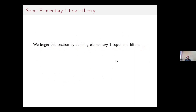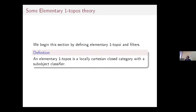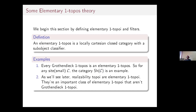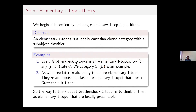We begin by defining elementary infinity-one toposes and then filters. An elementary infinity-one topos is a locally Cartesian closed category with a sub-object classifier. Examples include Grothendieck infinity-one toposes. For any small site C, the category of sheaves is an example of an elementary topos. Realizability toposes, which we'll define later, are also important examples of elementary infinity-one toposes that are not presentable.